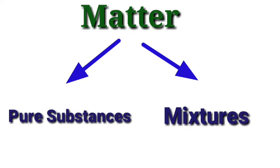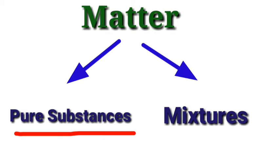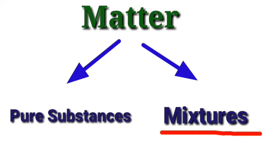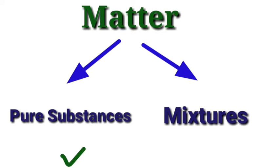Pure Substance means there is no mixture — it is a single kind of substance. For Mixtures, it means there are one or two substances combined. So this is a little introduction, and we are going to start the introduction of Pure Substance.